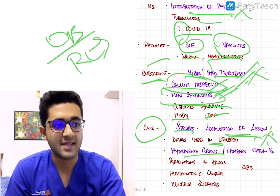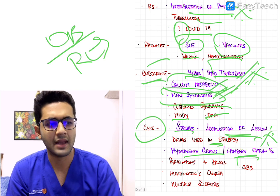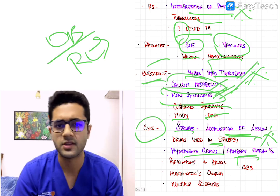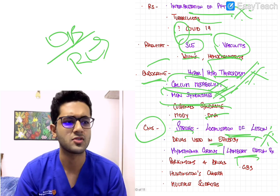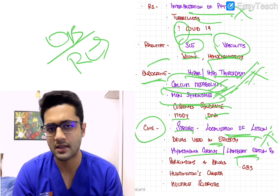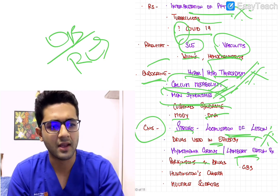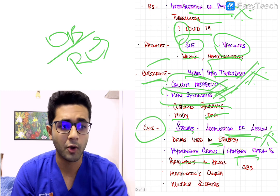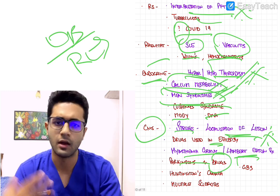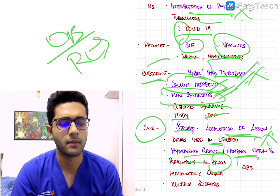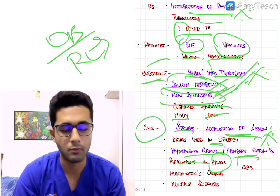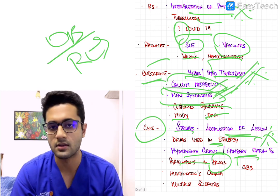Myasthenia gravis and Lambert-Eaton syndrome are important. Lambert-Eaton syndrome, being a paraneoplastic syndrome, is for some reason frequently asked — keep that in mind. Parkinson's disease is important, and more importantly the drugs used in Parkinson's are frequently asked, along with the hormonal factors — specifically the neurotransmitters involved with Parkinson's and movement disorders.